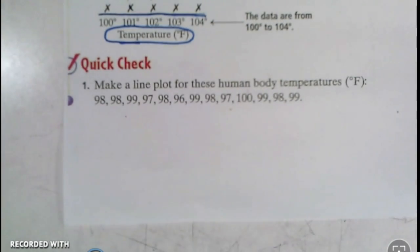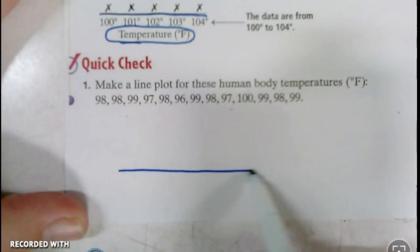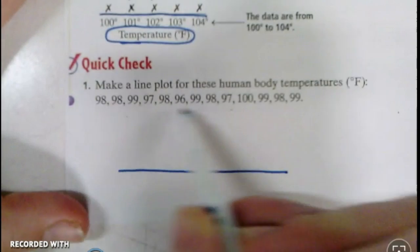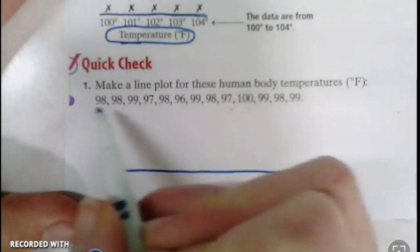Go ahead and make a line plot for these human body temperatures. You're going to start with a line down bottom, then find your range of which numbers occur, write each of those numbers down here, and then do x's for each time they appear.